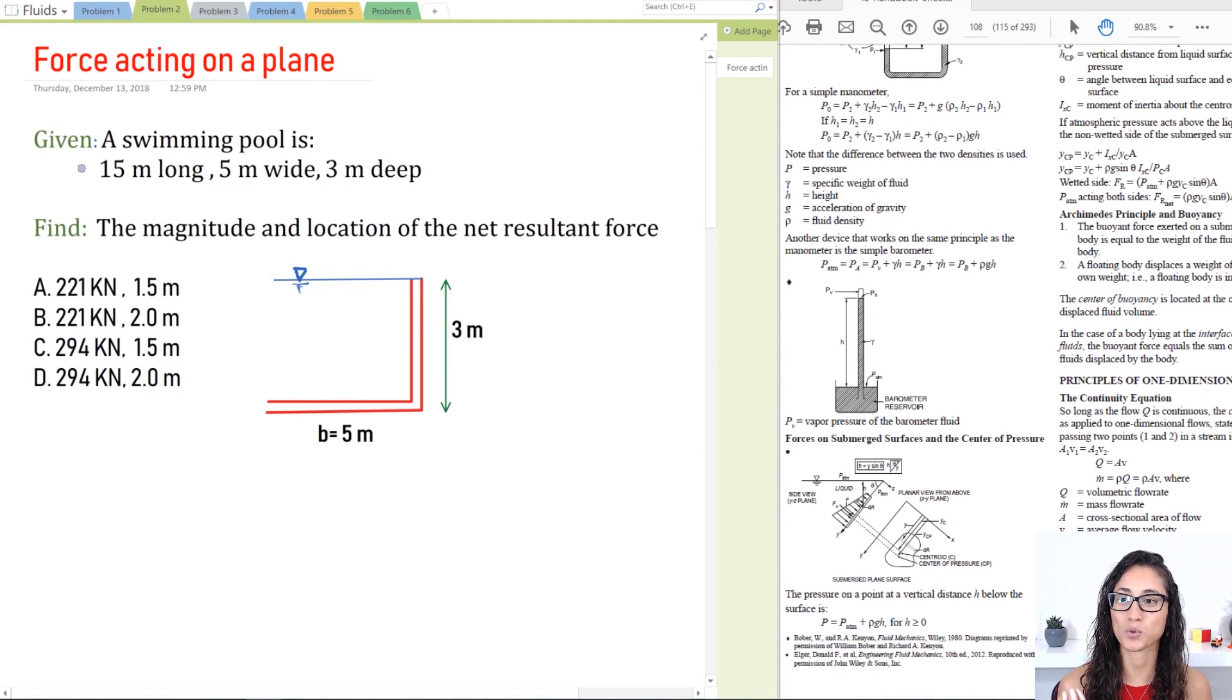Okay guys, so we have a swimming pool with the following dimensions and we need to calculate the magnitude and location of the net resultant force. So I would like to discuss two concepts before we actually start solving this problem.